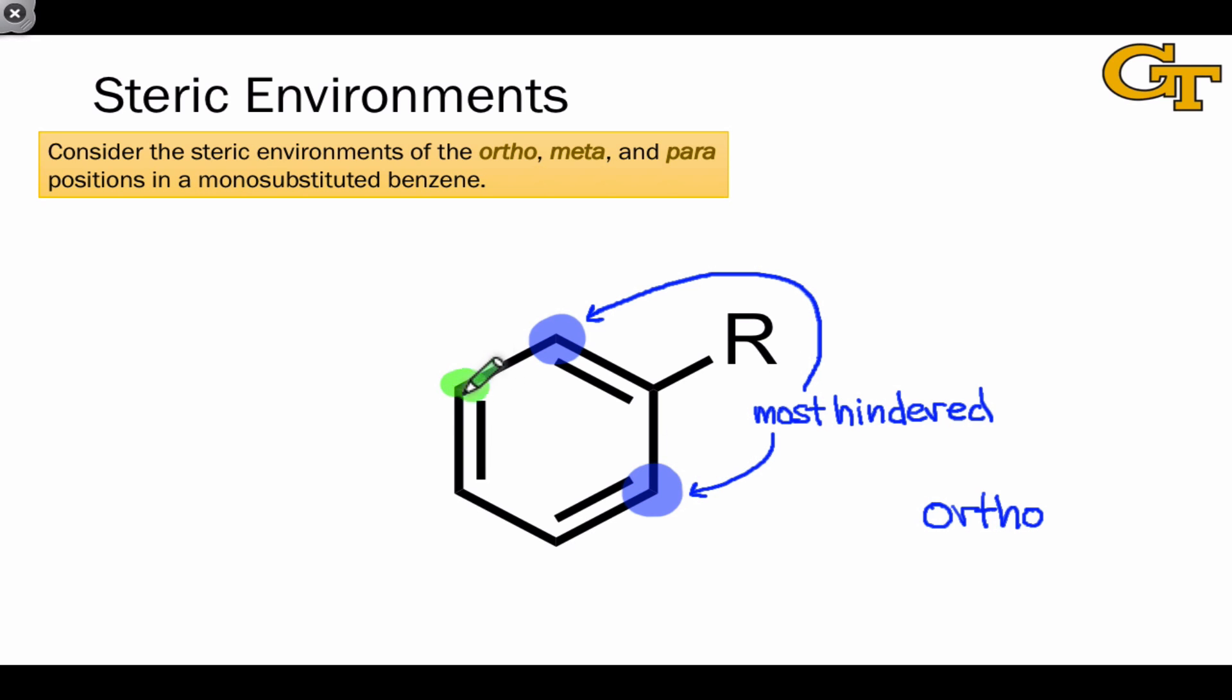The second most hindered positions are the meta positions. They're separated from the substituent by the ortho carbons, but for a large R group, they may experience some steric hindrance. Finally, the para position is the least hindered of all, and this is because it's on the opposite side of the substituted benzene from the R group.